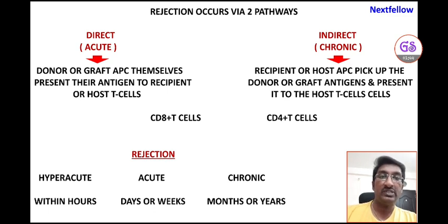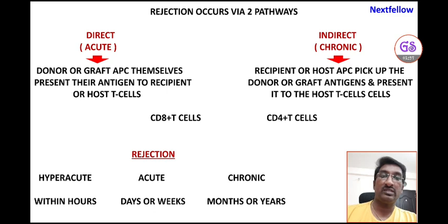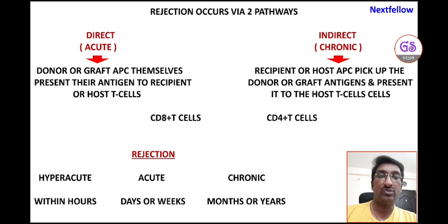The difference between the two pathways is which antigen presenting cell presents the antigen to the recipient T cell. If the donor or graft antigen presenting cell itself presents its antigen to the recipient T cell, it is the direct pathway. If the recipient or host antigen presenting cell picks up the antigen, it is the indirect pathway. In both cases, it is the recipient T cell that acts on the graft antigen.